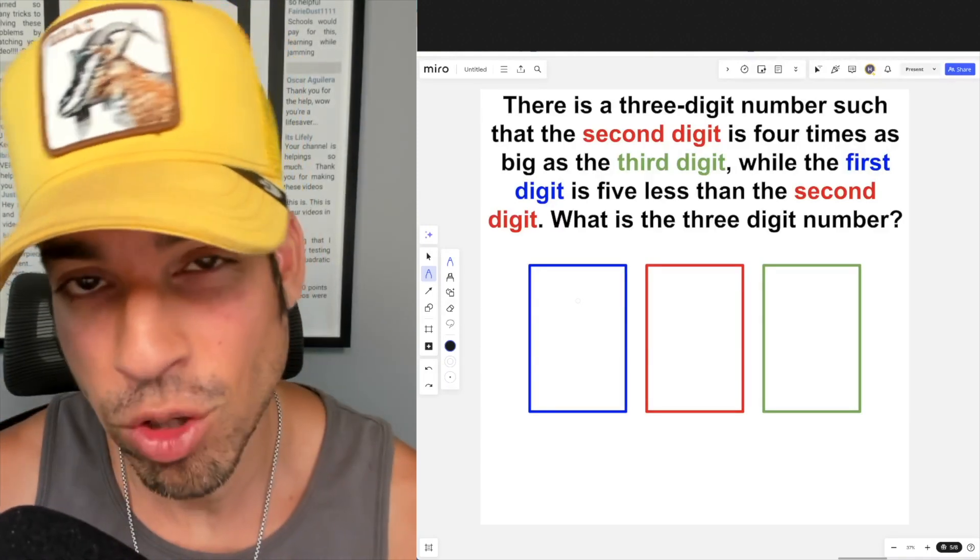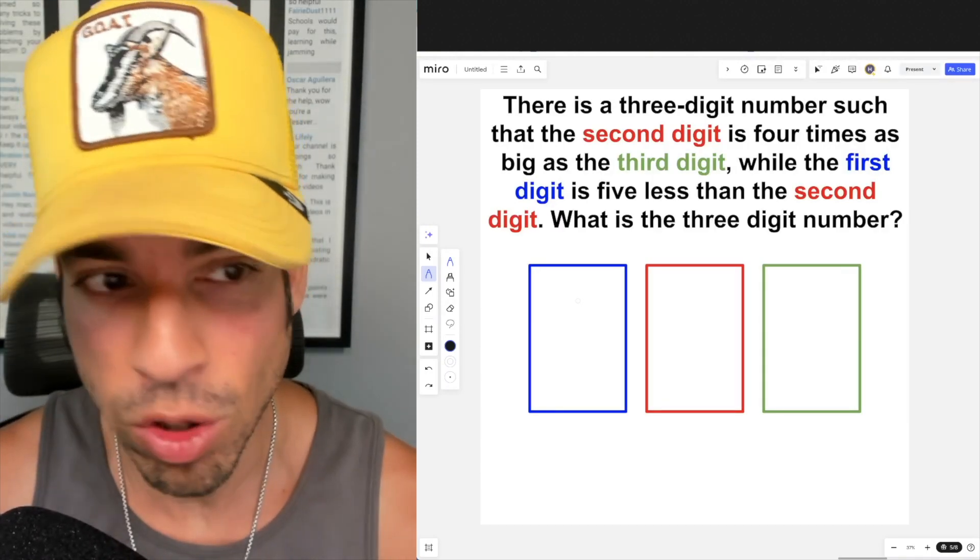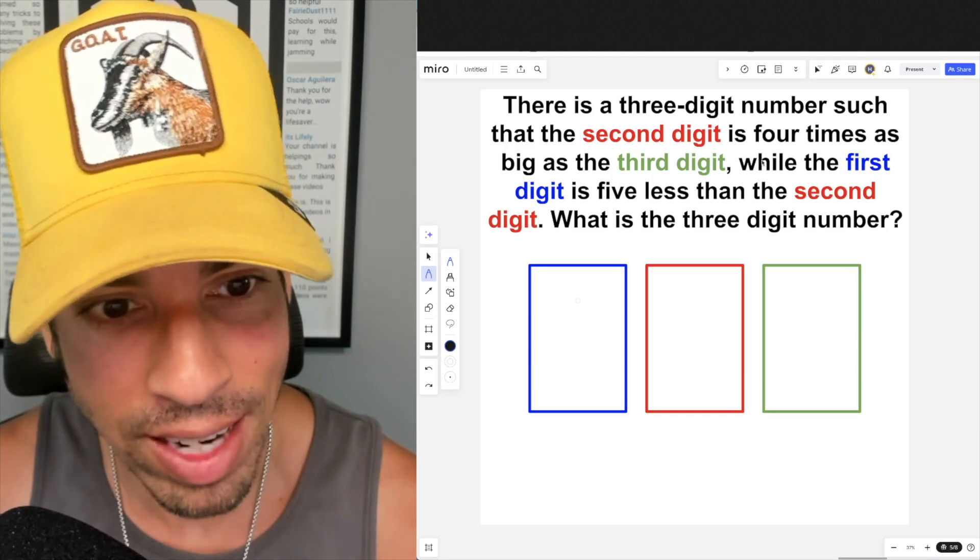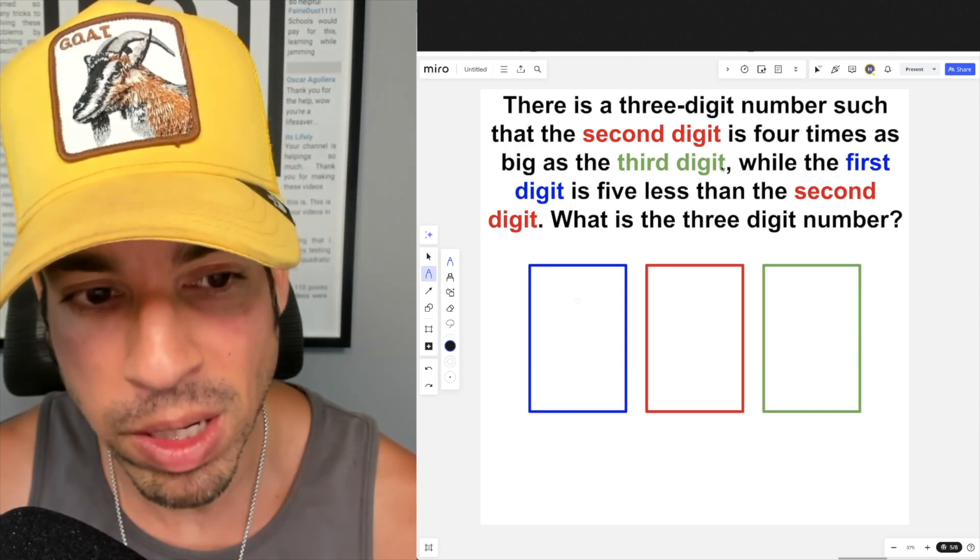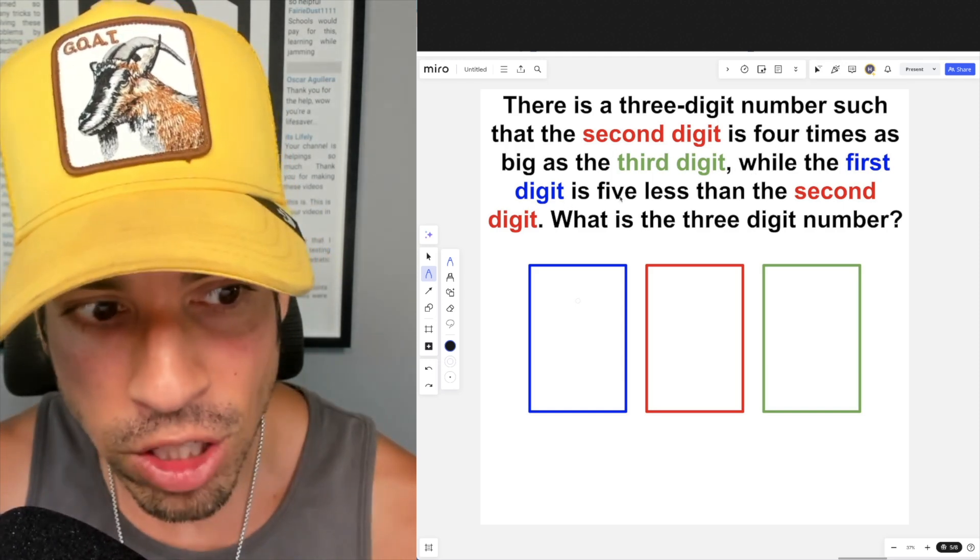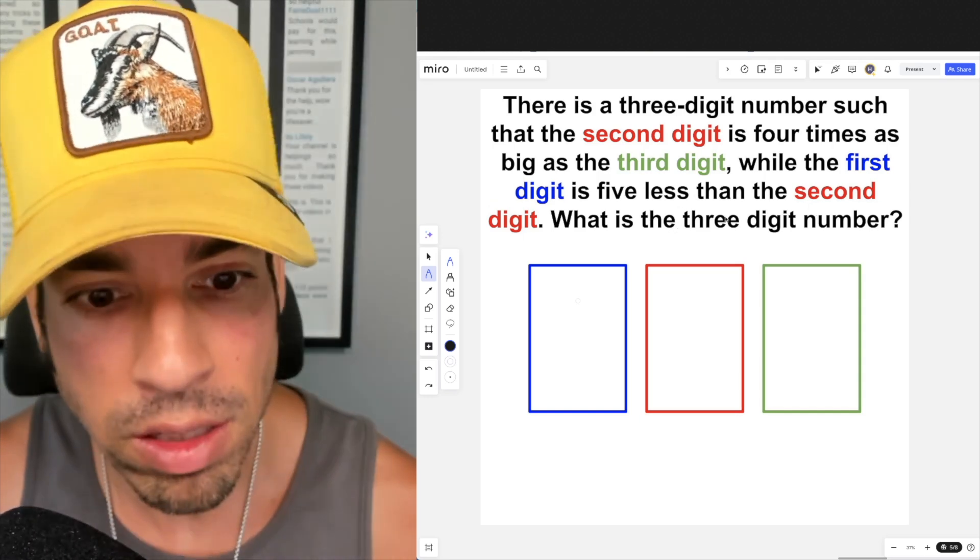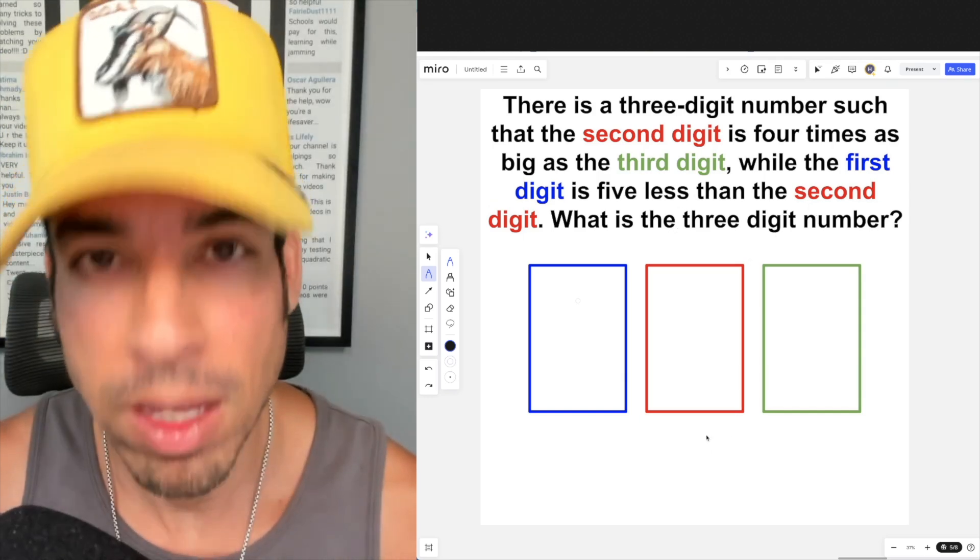What's up everybody and welcome back to another math puzzle. In this one, the question is as follows: there is a three-digit number such that the second digit is four times as big as the third digit, while the first digit is five less than the second digit. What is the three-digit number? Hit that pause button and see if you can figure it out.